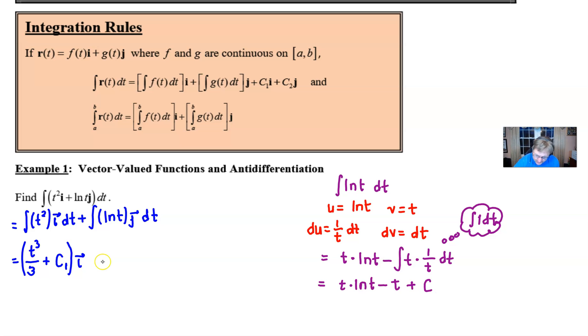Now for our particular problem, we're going to take this t ln(t) - t in parentheses and then add our constant that we'll use a subscript of 2 for. And then don't forget—it's very important that we attach that j.